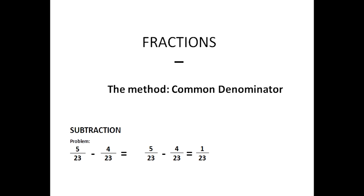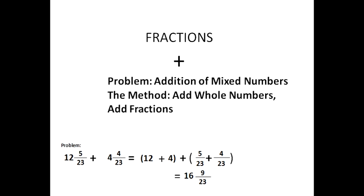Now we will add two mixed numbers. The method is very simple: we add the whole number parts, then add the fractions, and put the two together. So we have twelve and five over twenty-three plus four and four over twenty-three. Twelve plus four gives the whole number part sixteen. Five over twenty-three plus four over twenty-three is nine over twenty-three. Putting them together, our final answer is sixteen and nine over twenty-three.